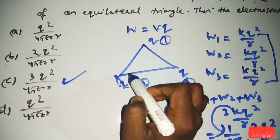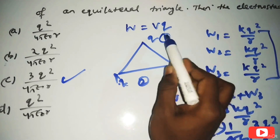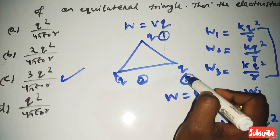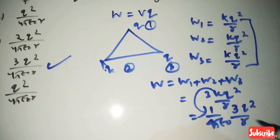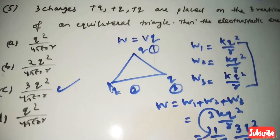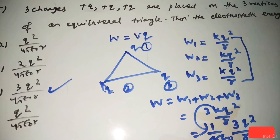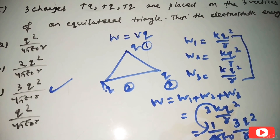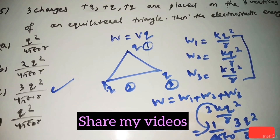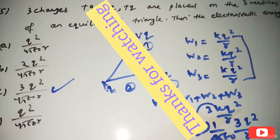So 3q²/4πε₀ is the correct answer. To summarize: for three charges at points 1, 2, 3 — combine 1 with 2, 1 with 3, 2 with 3 — add all energies, giving 3kq²/r. Option C is the correct answer. This concludes part two of the video; part three will be in the next video. Please share the video, subscribe to the channel, like it, and leave a comment.